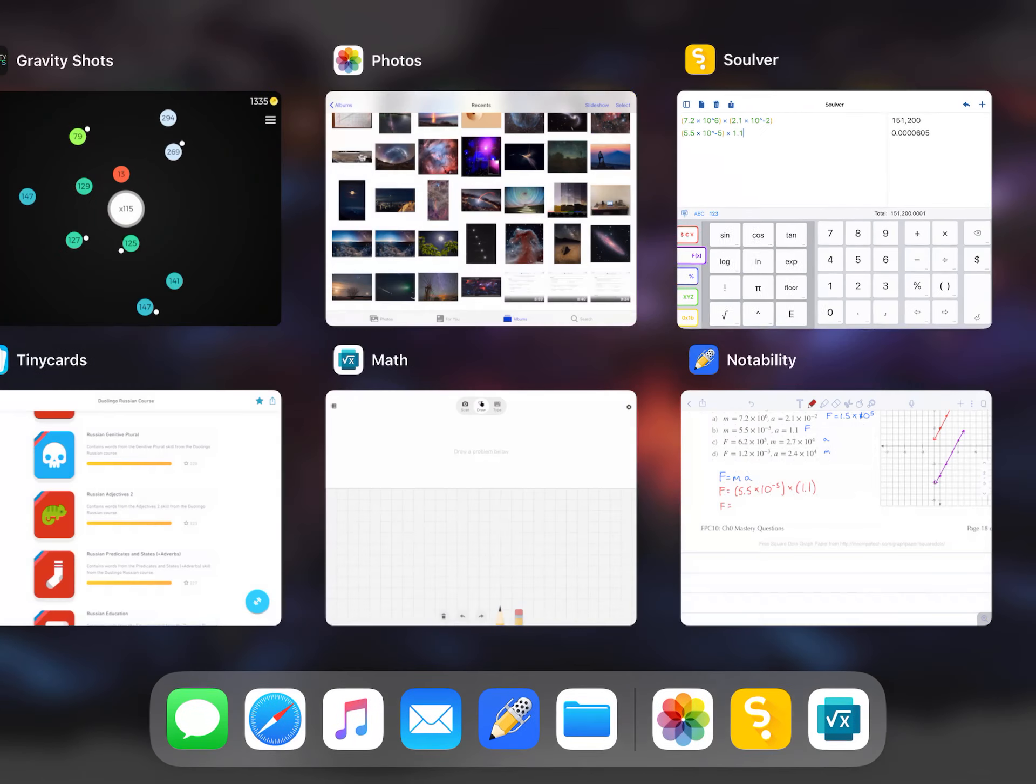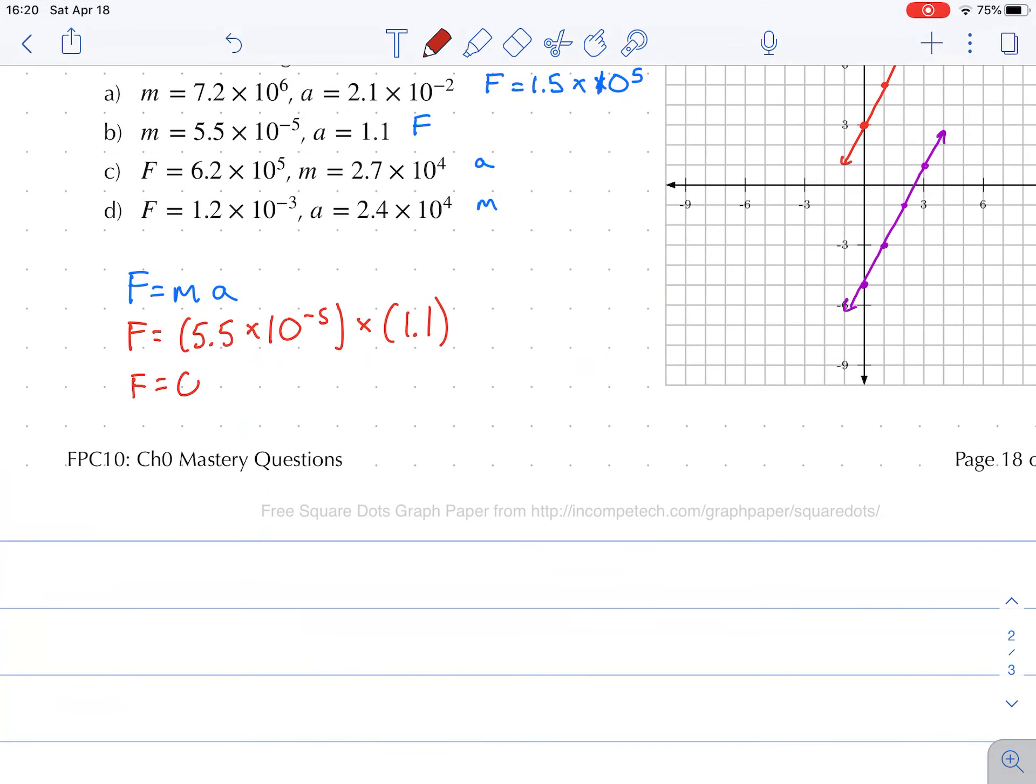So 0.0000605. Now I'm going to put this in scientific notation, so I'm going to want the decimal to go right there. To get force equal to 6.1, I round it to that place value. I move the decimal 1, 2, 3, 4, 5 times - 10 to the minus 5. I moved it 5 places to the right, so it's 10 to the minus 5.